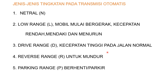Jenis-jenis tingkatan pada transmisi otomatis: yang pertama adalah netral. Kemudian yang kedua adalah low rank atau L, di mana low ini adalah mobil mulai bergerak kecepatan rendah, mendaki, dan menurun. Kemudian untuk drive rank-nya atau D, digunakan pada kecepatan tinggi pada jalan normal. Kemudian reverse rank atau mundur, R, untuk mundur. Kemudian parking rank atau P, itu adalah untuk berhenti atau parkir. Itu adalah lima kode yang ada pada transmisi otomatis.